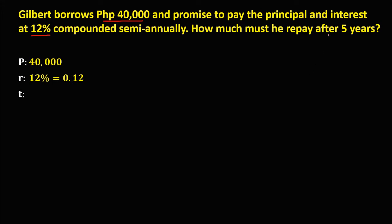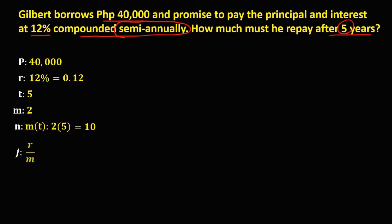For the time, since he repays after five years, the time is equal to 5. For the compounding period, since it's compounded semi-annually, that's two times in a year, so the compounding period is equal to 2. The number of periods is the compounding period times the time, so 2 times 5 equals 10. For the interest per period, that's the rate over the compounding period: 0.12 divided by 2, so the interest per period is 0.06.